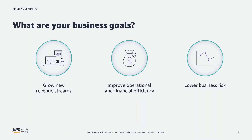Business risk can be on multiple dimensions. It can be things like credit assessments and using AI to lower financial risk, but it can also be things like health and safety. We're seeing a lot of use cases particularly in the APAC market around using computer vision to identify when an employee might not be wearing their protective equipment on a work site, or is too close to heavy machinery, or in COVID use cases where they're not wearing masks or not socially distancing.